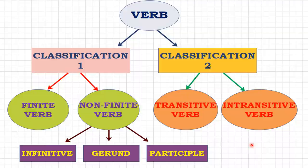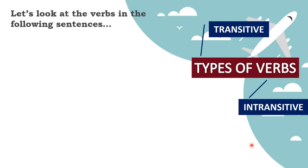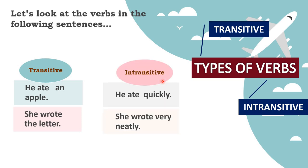Let us start with the first classification: transitive and intransitive. Let us look at the verbs in the following sentences. 'He ate an apple.' The verb is 'ate.' What follows the verb is 'an apple,' which according to sentence structure is an object. When we ask the question 'what?' after 'ate,' we get 'an apple' as the answer.